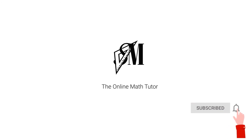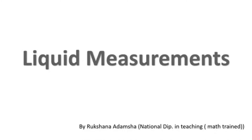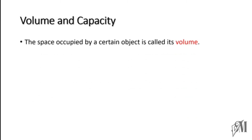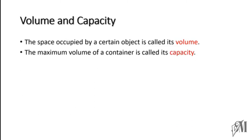Hi everyone, welcome to Smart Math Online Tutor. Through this video we are going to discuss about liquid measurements. To get started, let us see what is the difference between volume and capacity. The space occupied by a certain object is called its volume, whereas the maximum volume of a container is called its capacity.